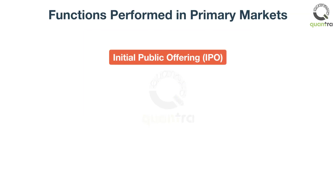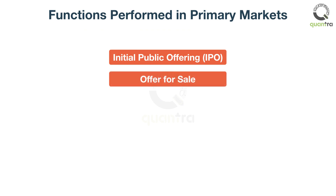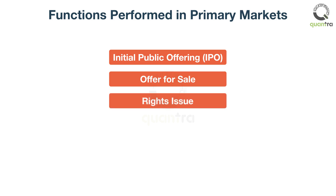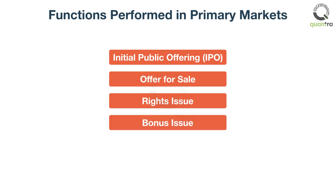In addition to public issuance of shares, other events that take place in primary markets can be: Offer for sale, a mechanism where promoters in a listed company sell their shares directly to the public. Rights issue, where a listed company offers shares to its existing shareholders in proportion to their holding of old shares. Bonus issue, where a listed company offers free additional shares to its existing shareholders.